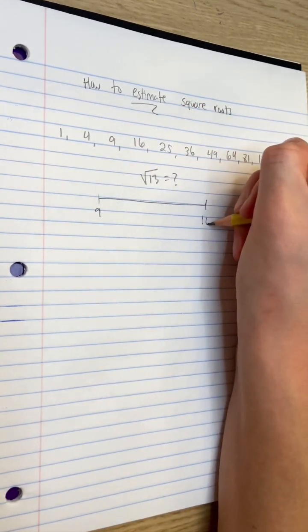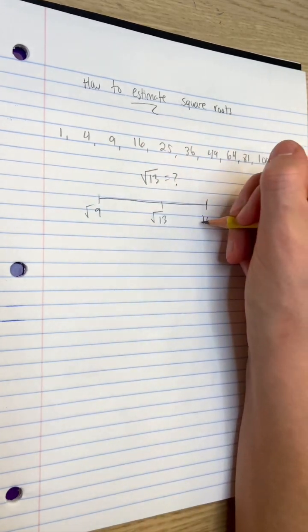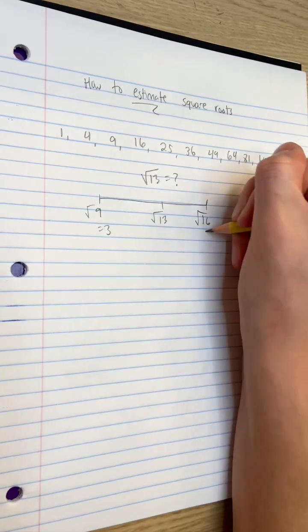Well, 13 is in between two perfect squares, 9 and 16. Therefore, the square root of 13 must be in between the square root of 9 and the square root of 16.